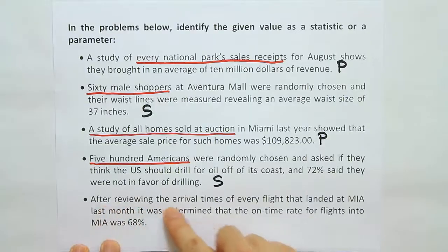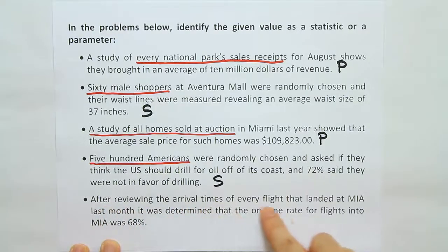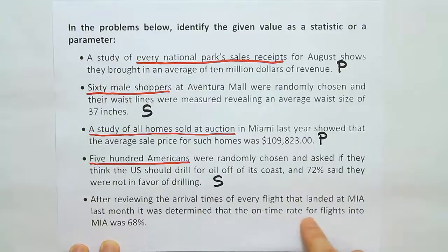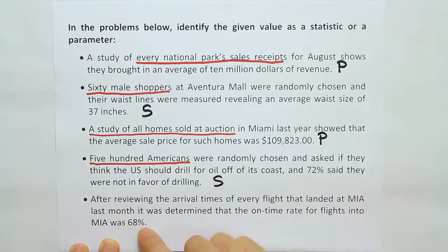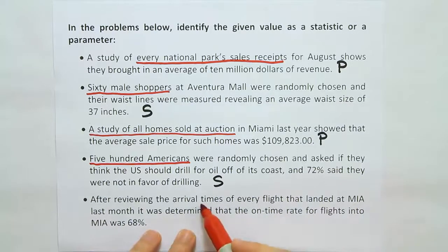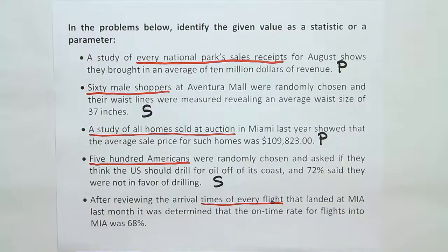Lastly: 'After reviewing the arrival times of every flight that landed at MIA last month, it was determined that the on-time rate for flights into MIA was 68%.' Here we see that they reviewed every flight, so this percentage, 68%, is a population parameter.